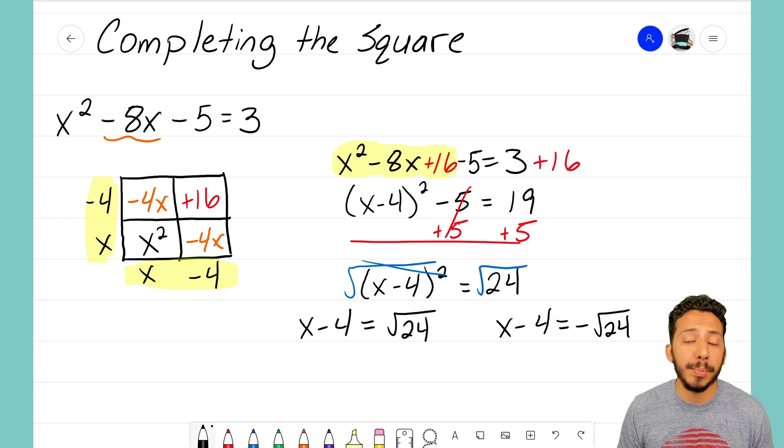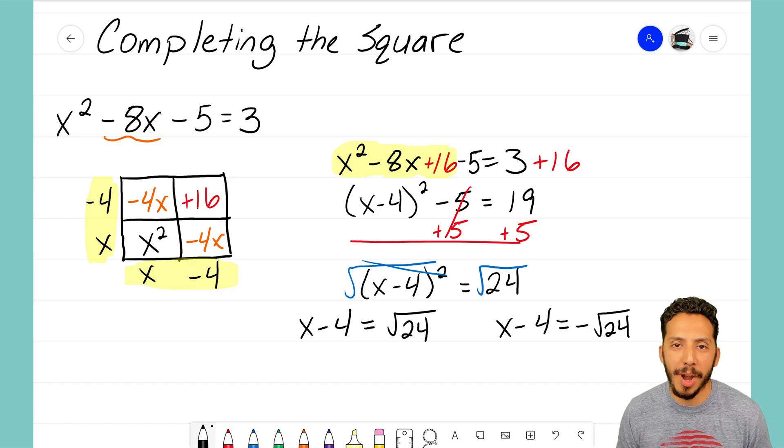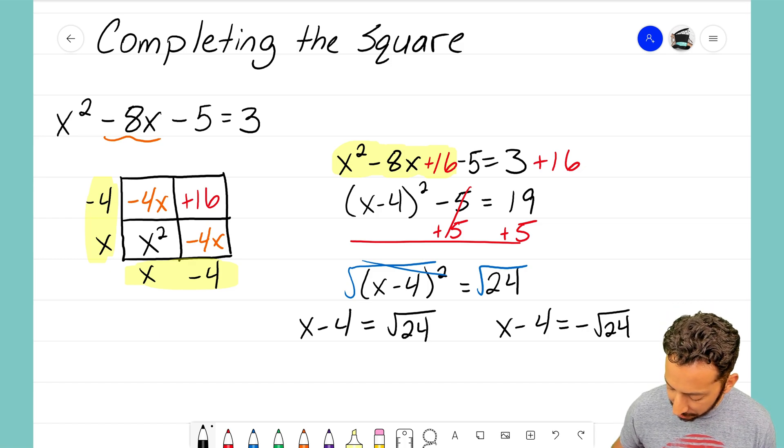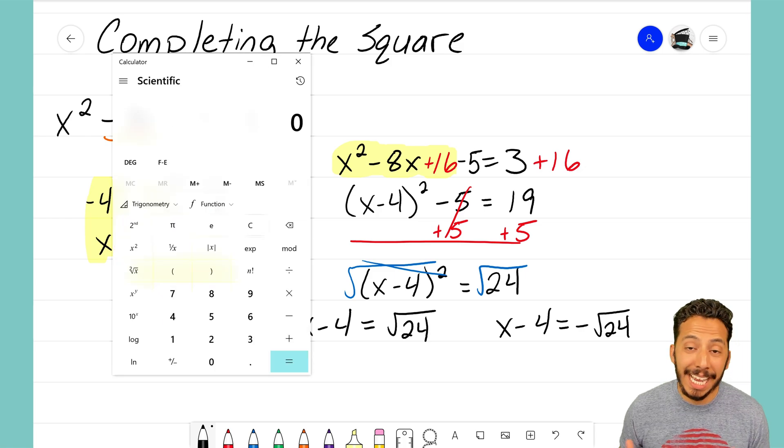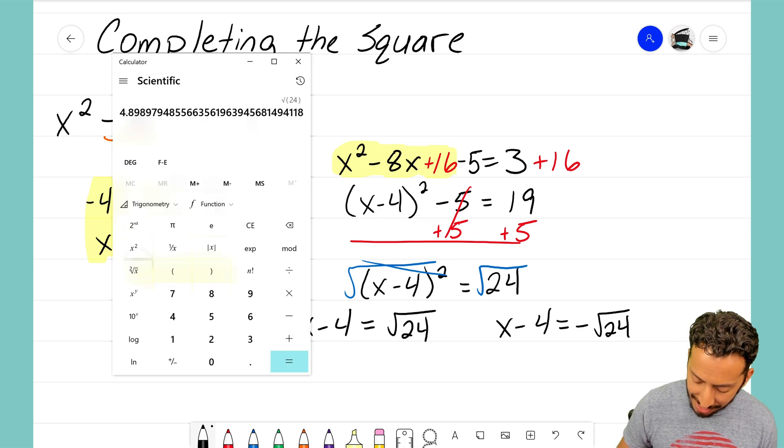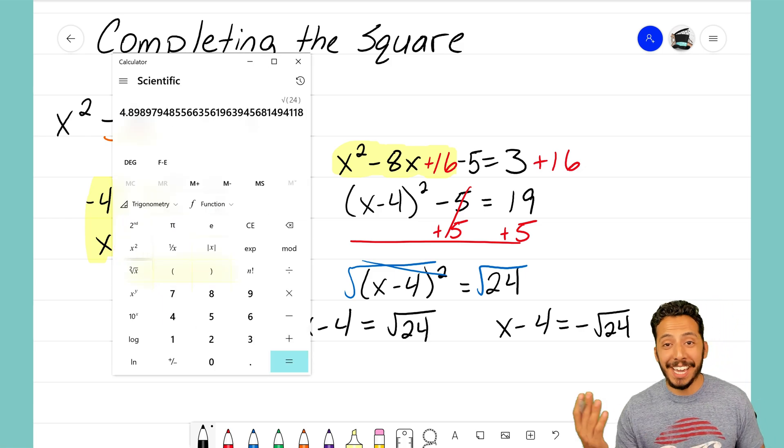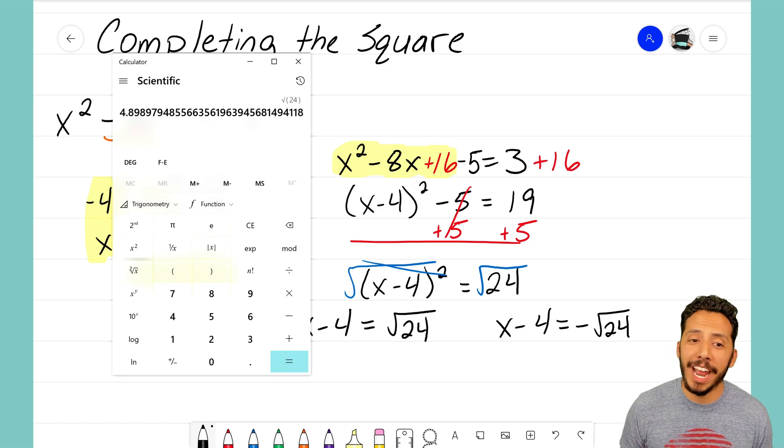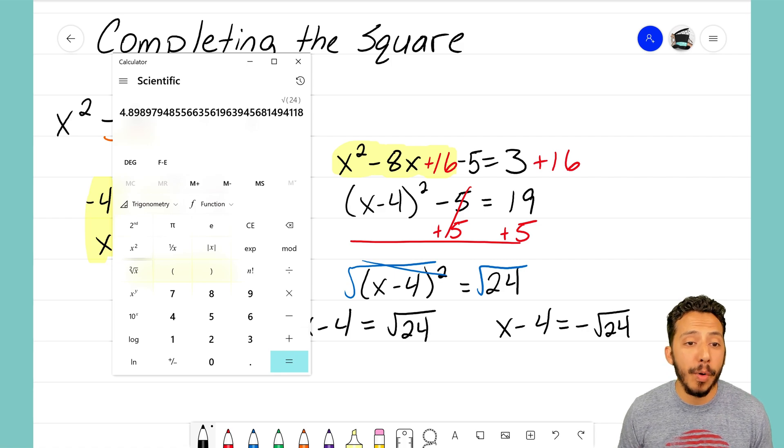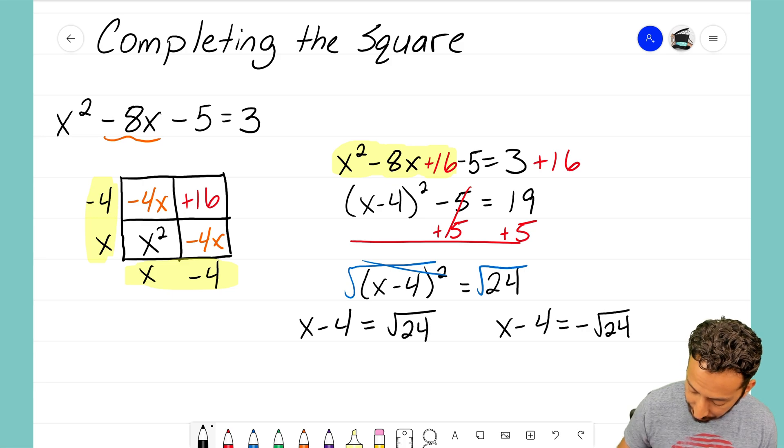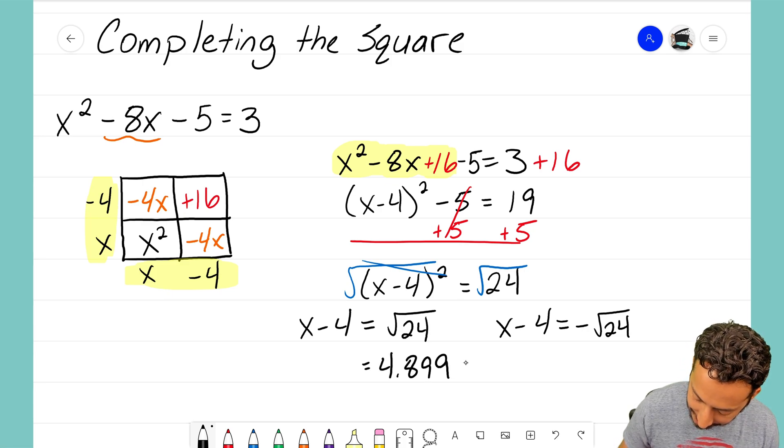So what we have to do now is we have to pull up our calculator and type in what the square root of 24 is so that we can continue to solve this problem. So I'm going to open up my calculator here and I'm going to type in 24 and the square root and I see that yep that is definitely an irrational number. I'm going to go ahead and round that to 4. I would say it rounds to 4.899.